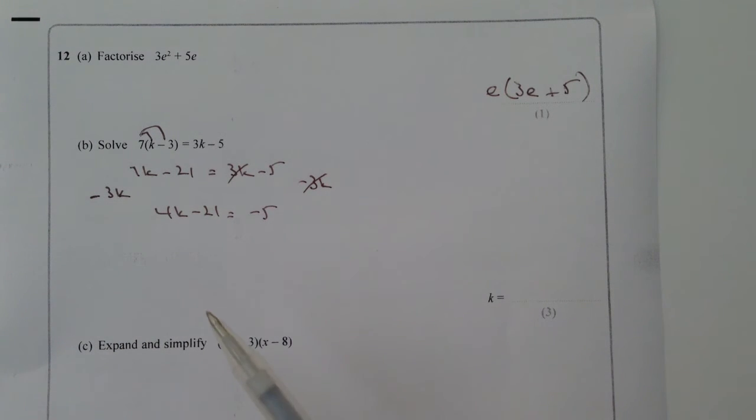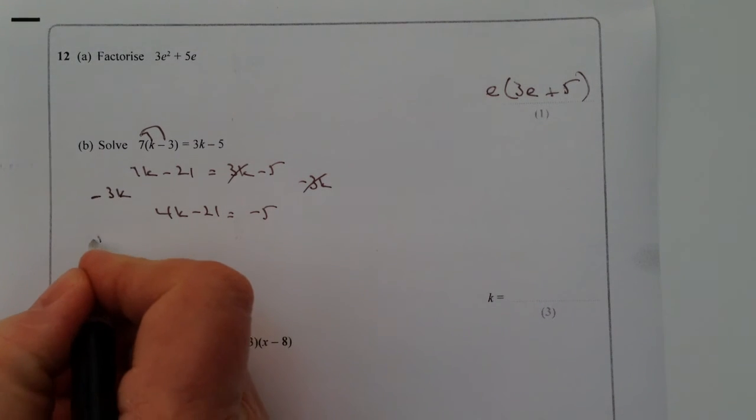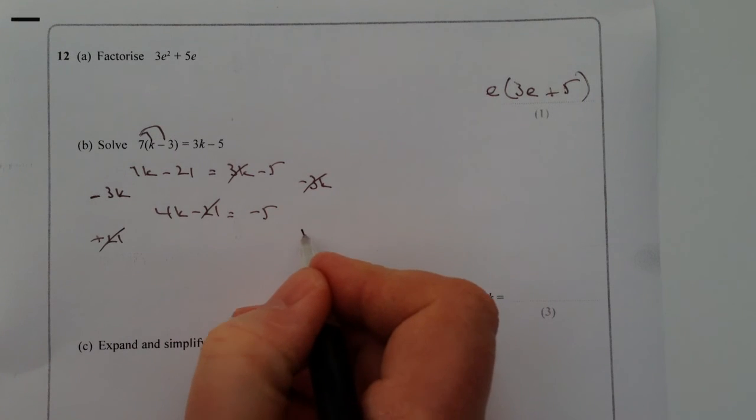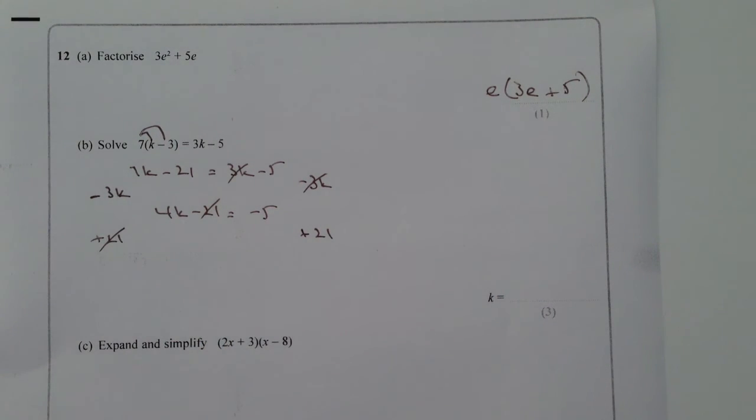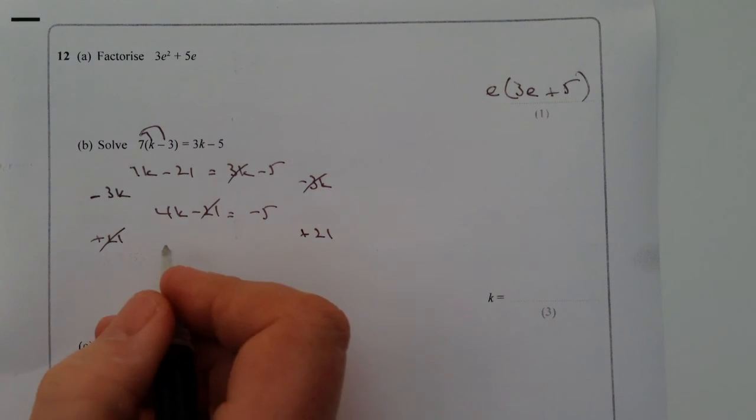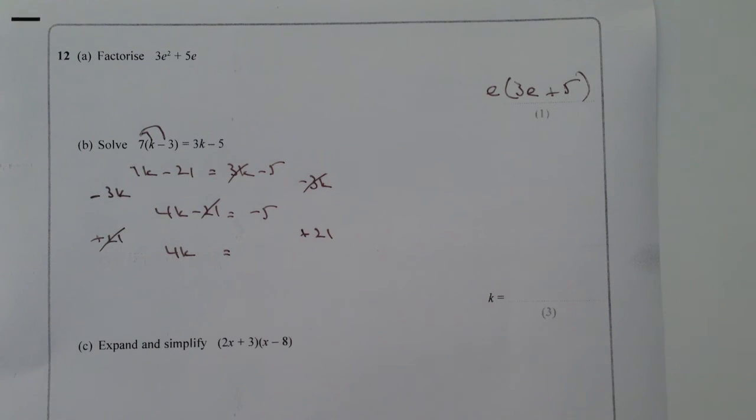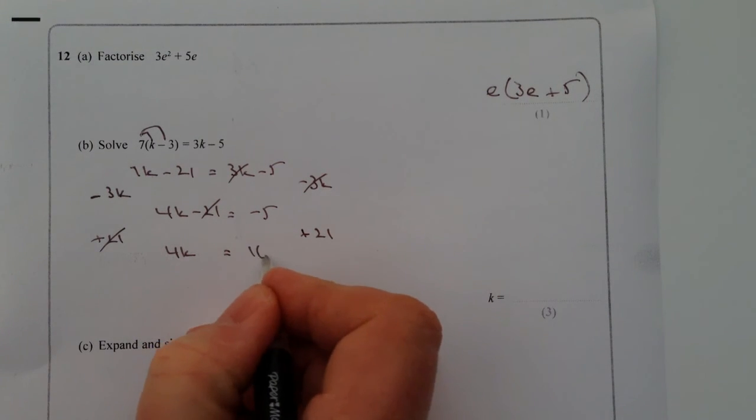OK, now I need to get rid of the minus 21. So what I'm going to do is I'm going to add that 21 to both sides. So if I add 21, it means that cancels out. But I have to do it to both sides. I'm going to add 21 to that side. And that means I get left with 4k, and that equals minus 5 plus 21 is going to be plus 16.